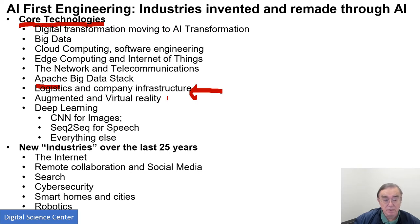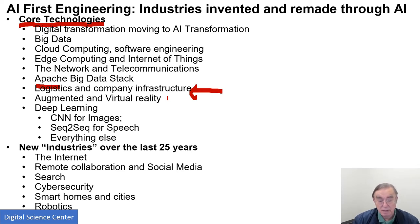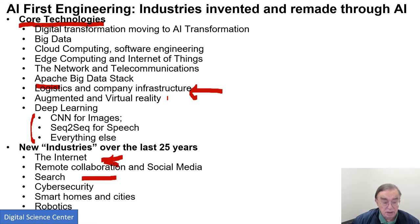There are new developments in virtual reality and augmented reality, closely connected with AI, especially when combined with gaming. Then we have deep learning itself — things like convolutional neural nets for images, and sequence-to-sequence transformations for speech and other time-series processing such as genomic sequences. Deep learning also has various other capabilities. Then we have newer industries that have grown over the last few years: the internet itself, social media and collaboration, search, cybersecurity, smart homes, smart cities, and robotics — things that didn't really exist 25 years ago.